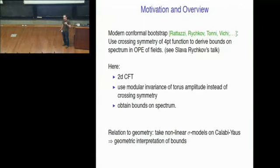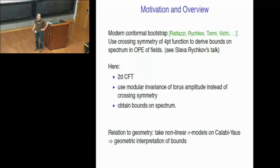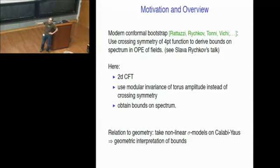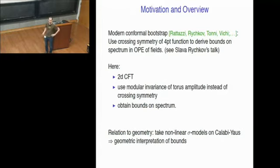The best context to give for my talk is that it's in the framework of the modern conformal bootstrap, which Slava Rychkov already talked about on Monday. The conformal bootstrap got revived by this seminal paper by Rattazzi, Rychkov, Tonni, and Vichi a couple of years ago. The basic point is that you use general properties of amplitudes of conformal field theories to derive certain constraints on those theories.